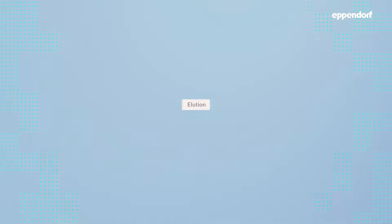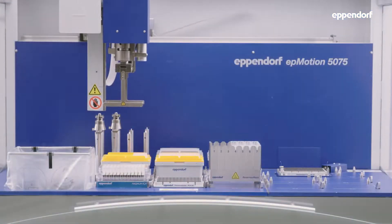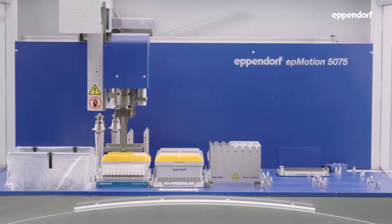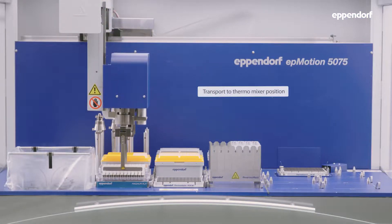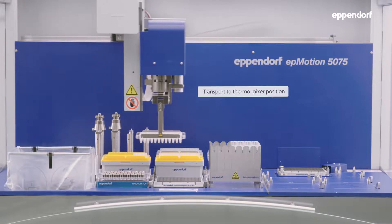The final step of the bead cleanup is the elution step to separate the nucleic acids from the beads. The sample plate is moved to the thermomixer position of the EP Motion that has a 96-well plate adapter.